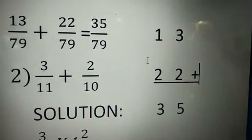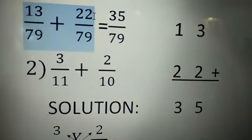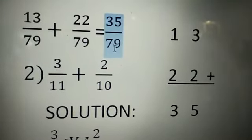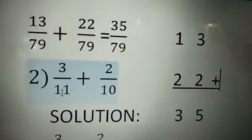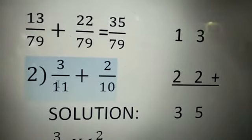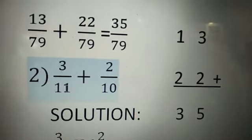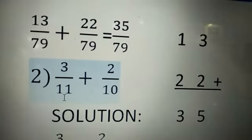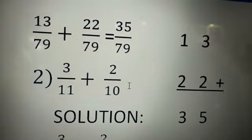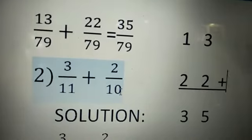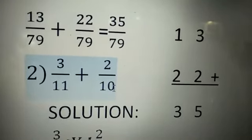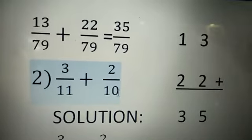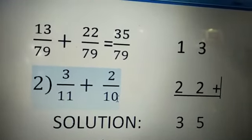This is how you need to find the addition, children. When the denominator is the same, we can find it easily. But suppose the denominators are different — see the second problem, children: 3 divided by 11 plus 2 divided by 10. You see both denominators are different — 11 and 10 are given. So now we can't find the sum directly. You need to use some method. Using LCM it is possible, but we haven't studied LCM yet.